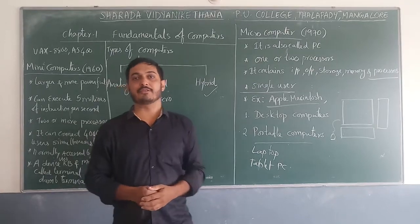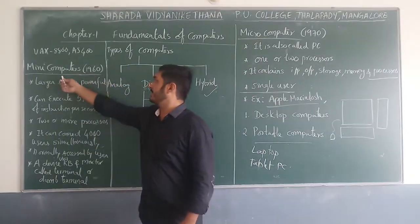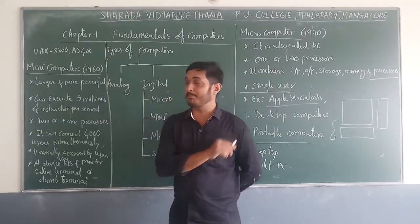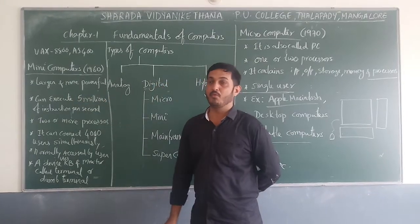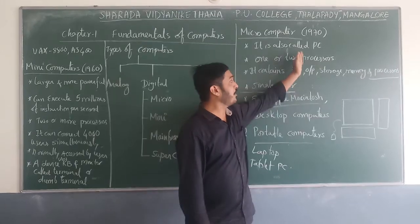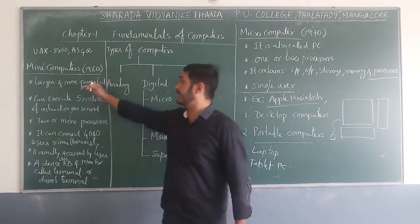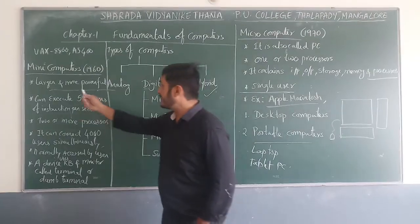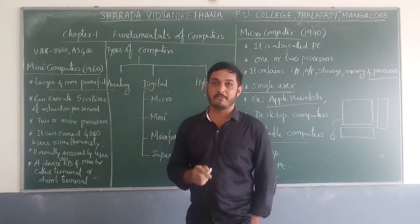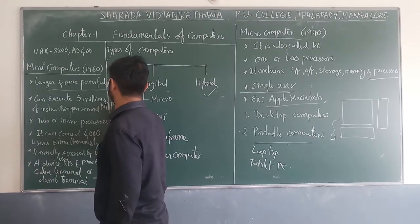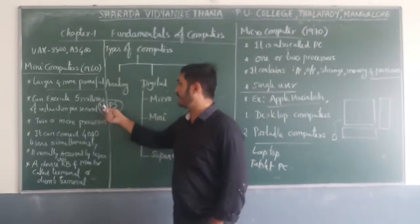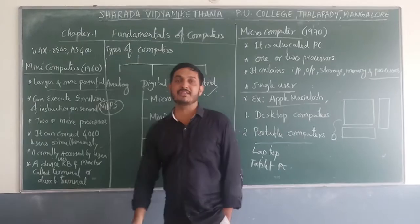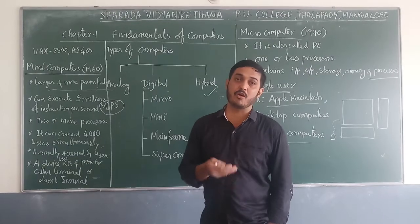Next is mini computer, invented during the 1960s. It is larger and more powerful than micro computer — while a micro computer can occupy a tabletop, a mini computer occupies a room or building. It can execute five million instructions per second (MIPS — Millions of Instructions Per Second). Mini computers are used by small or medium scale industries.